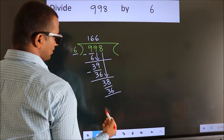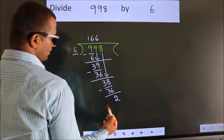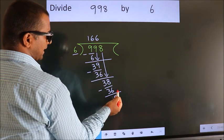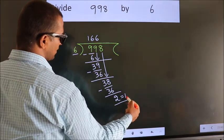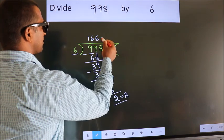Now we subtract. We get 2. No more numbers to bring down, so we stop here. This is our remainder. This is our quotient.